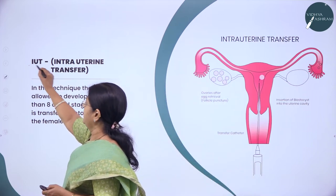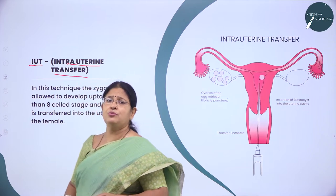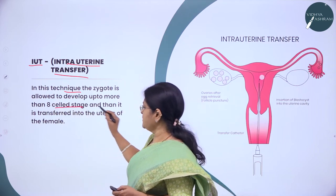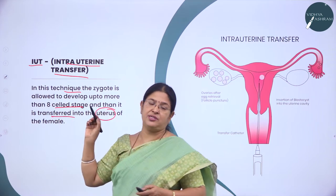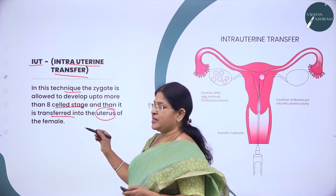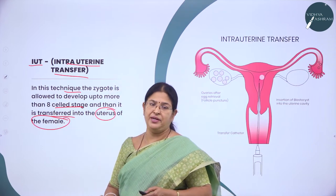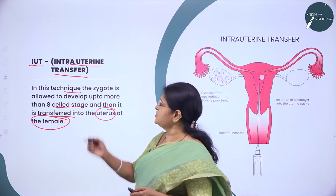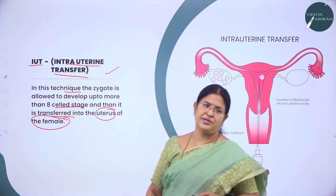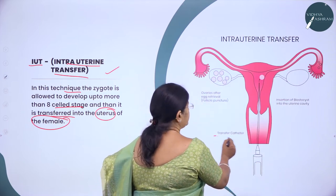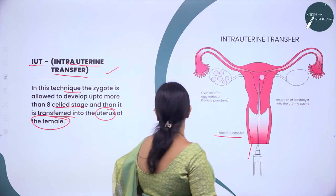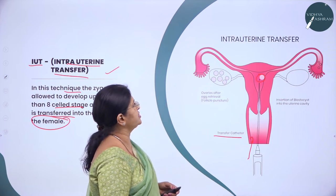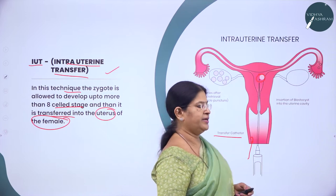Next is Intrauterine Transfer — IUT. In this technique, the zygote is allowed to develop up to the 8-cell stage and then transferred into the uterus rather than the fallopian tube. From the uterus it develops and gets attached to the endometrium wall, and the process of pregnancy begins. A catheter is used to introduce the embryo, which is allowed to develop to more than 8-cell stage before introduction.